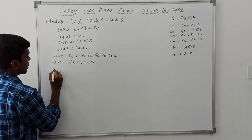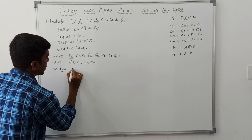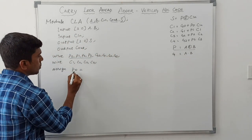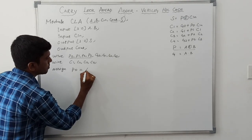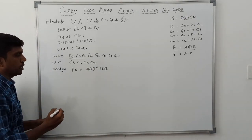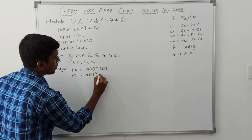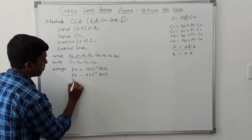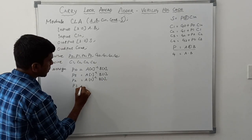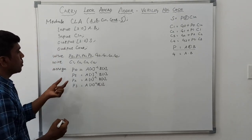Now I go to the operation. First I find the propagation lines P0 to P3. The formula is P = A XOR B. So: assign P0 = A[0] ^ B[0]; assign P1 = A[1] ^ B[1]; assign P2 = A[2] ^ B[2]; assign P3 = A[3] ^ B[3]. Propagation signal assignments are complete.